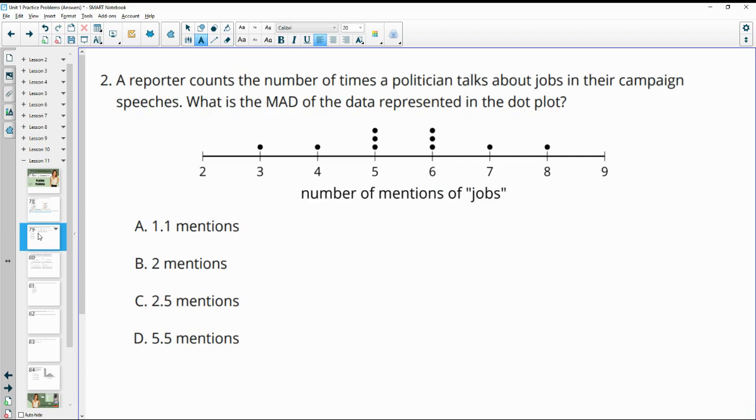Number two, a reporter counts the number of times a politician talks about jobs in their campaign speeches. What is the mean absolute deviation of the data represented in this dot plot? So remember for figuring out the mean absolute deviation, we need to figure out the actual mean first. And if we look here, this data is symmetric. So the mean is going to be right in the middle or the part that separates the data. So in this case, that's going to be 5.5 right in between 5 and 6.